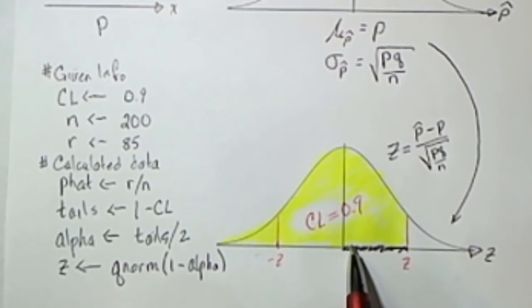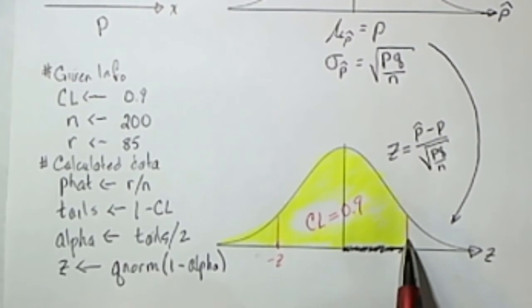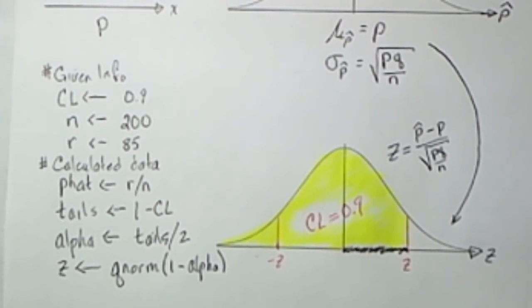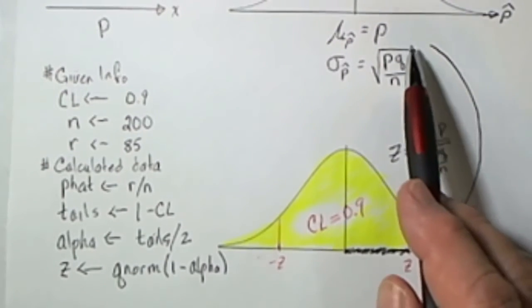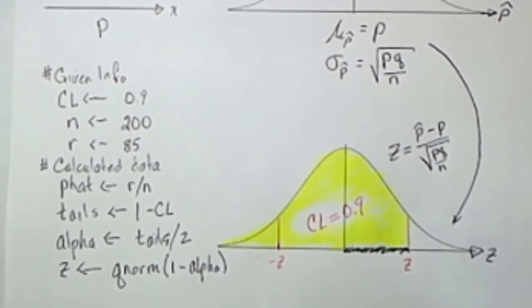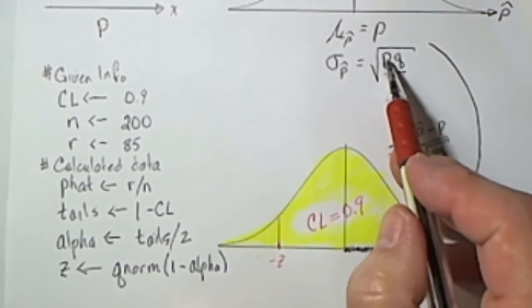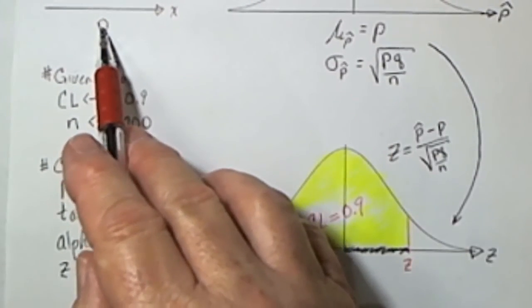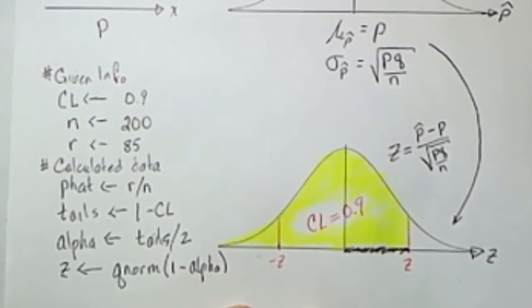Now I'd like to know what that distance is from the mean up to Z when it's moved back up here. To do that I will need to know what this standard deviation is. Unfortunately I can't find that standard deviation because I don't know what P is and I don't know what Q is.